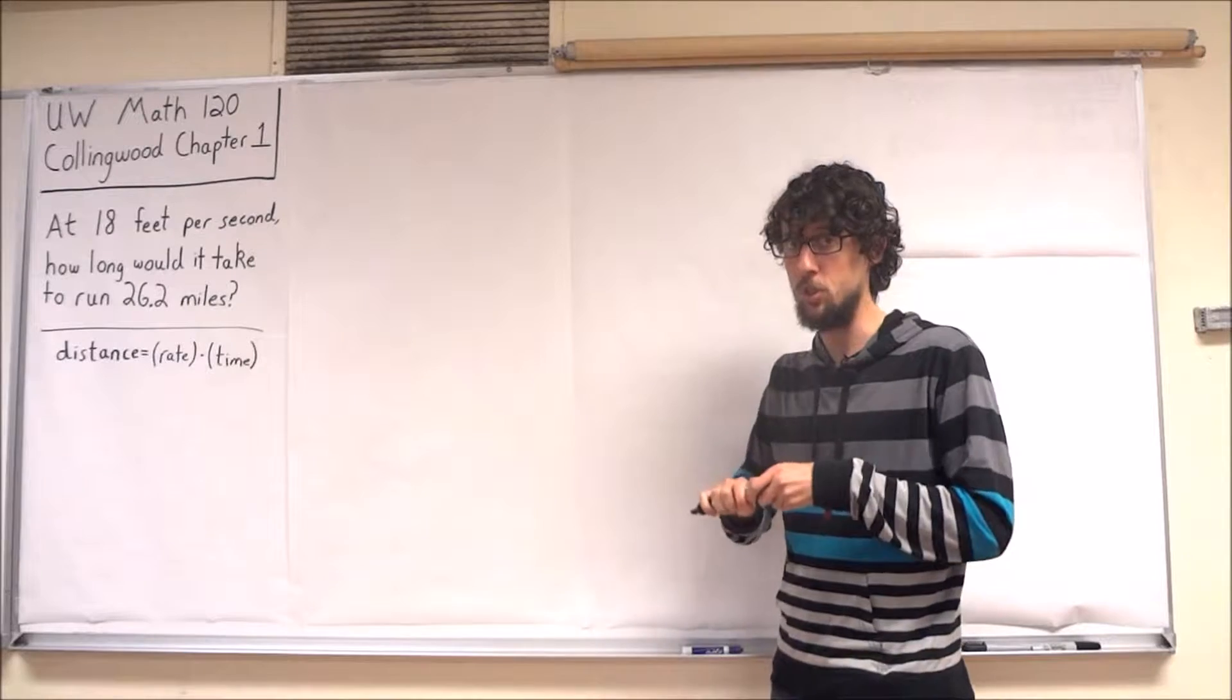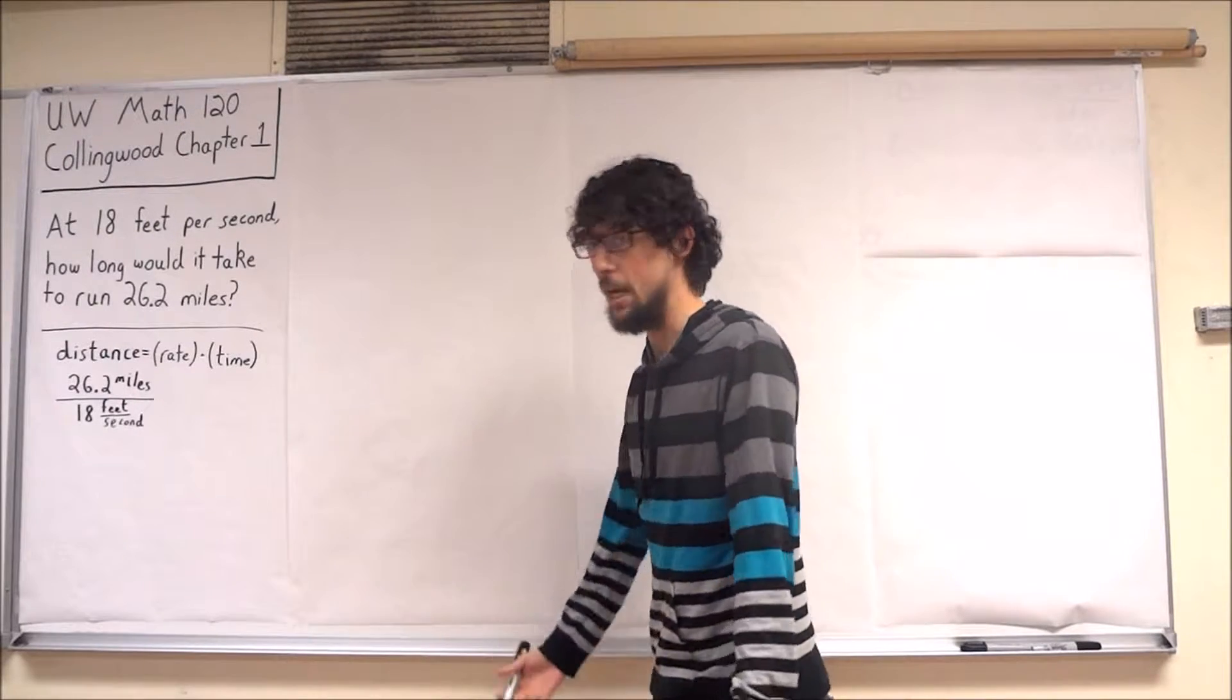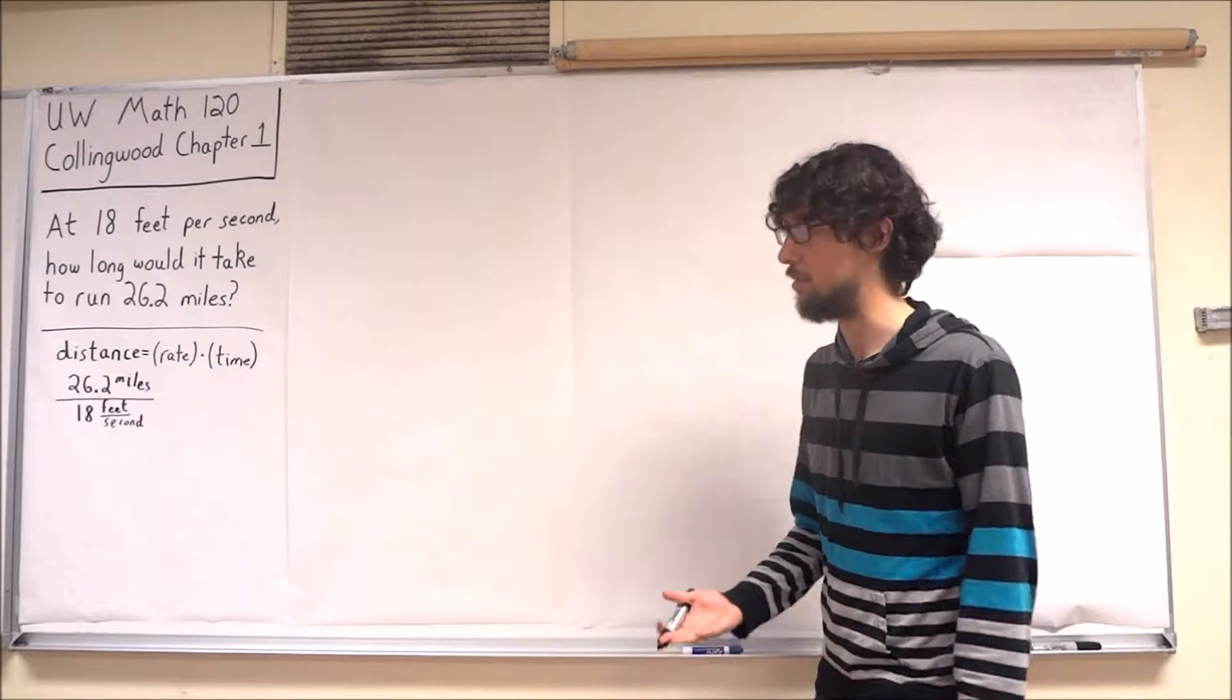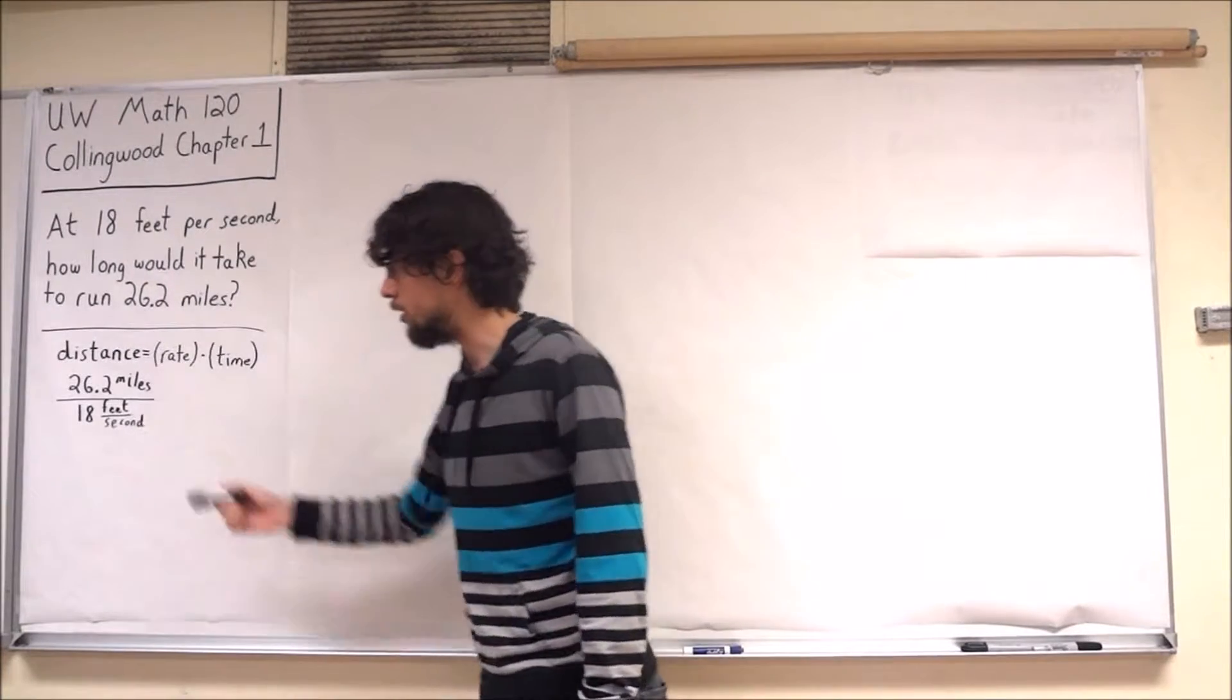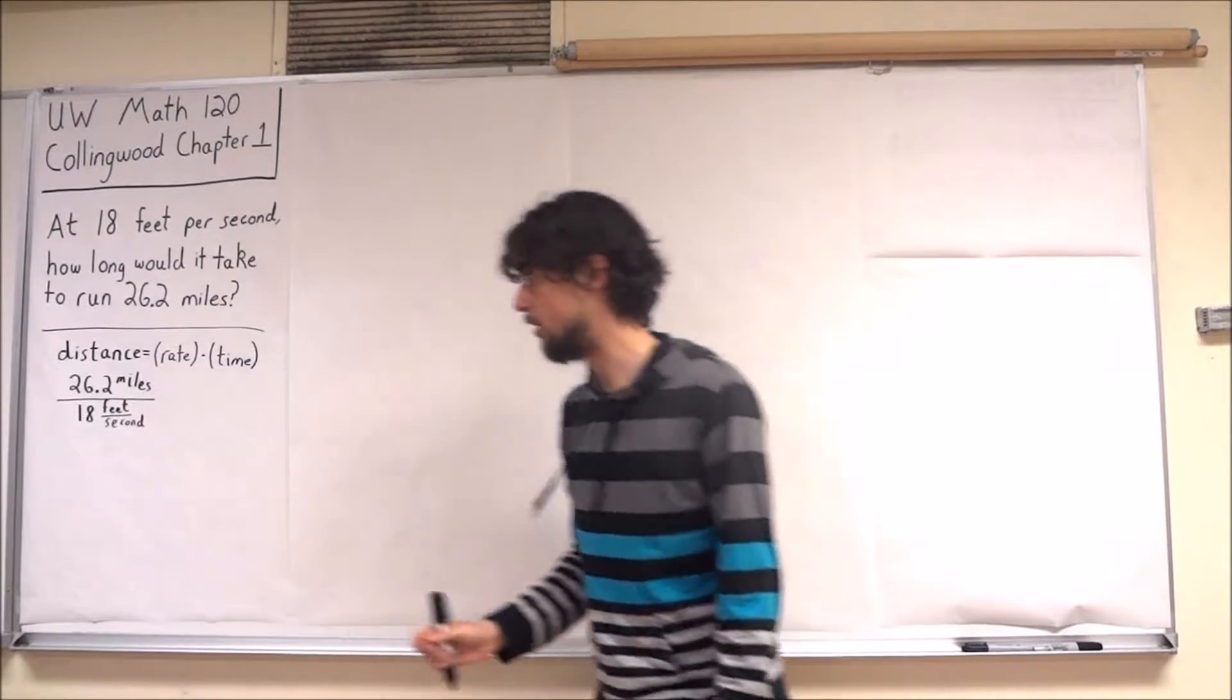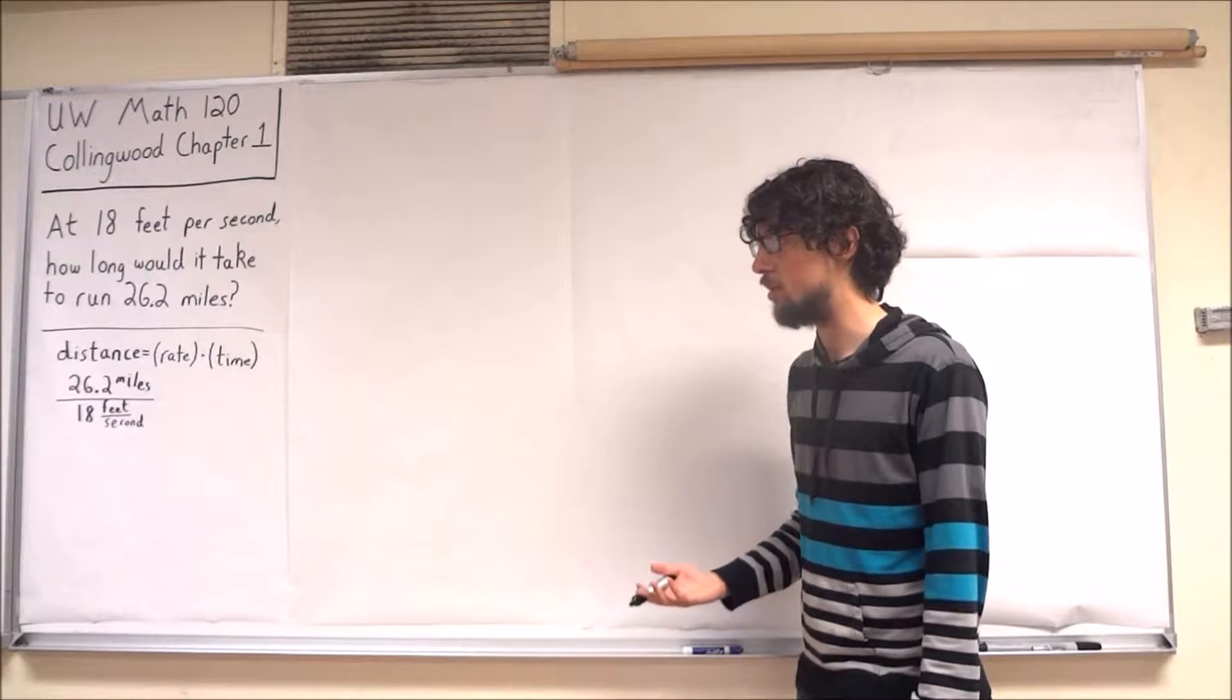Let's see what would happen if we tried that approach. So I've written here 26.2 miles over 18 feet per second. When we're working with units, we should really think of them in some sense as behaving like fractions, in particular in the sense of canceling out. So if the denominator here was written in terms of miles per second, then we would essentially have miles over miles per second, and we would find that these miles would cancel out, our seconds would end up in the numerator, and our answer would be in units of seconds.